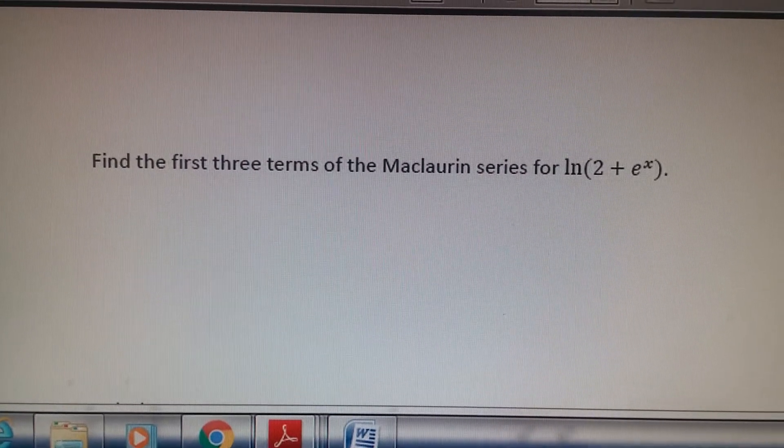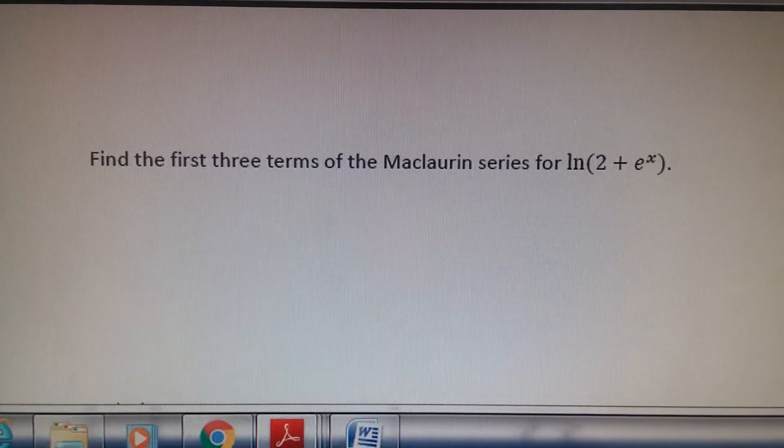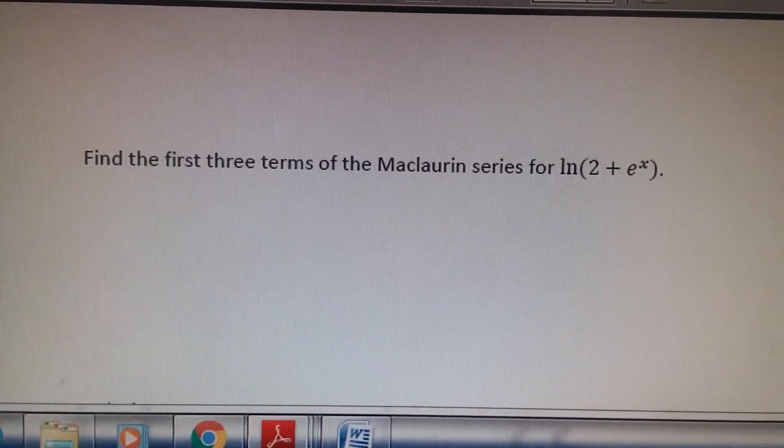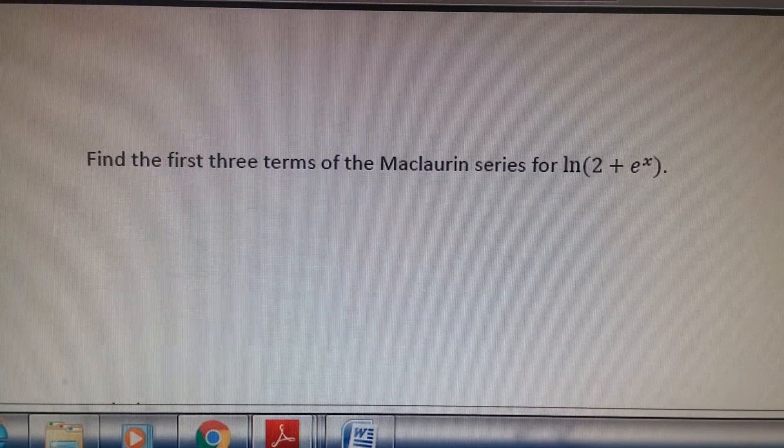I'm a little pressed for time and I don't have the best technology with me right now, so I'm going to do this the old-fashioned way. But here's a question: find the first three terms of the Maclaurin series for the natural log of 2 plus e to the x.